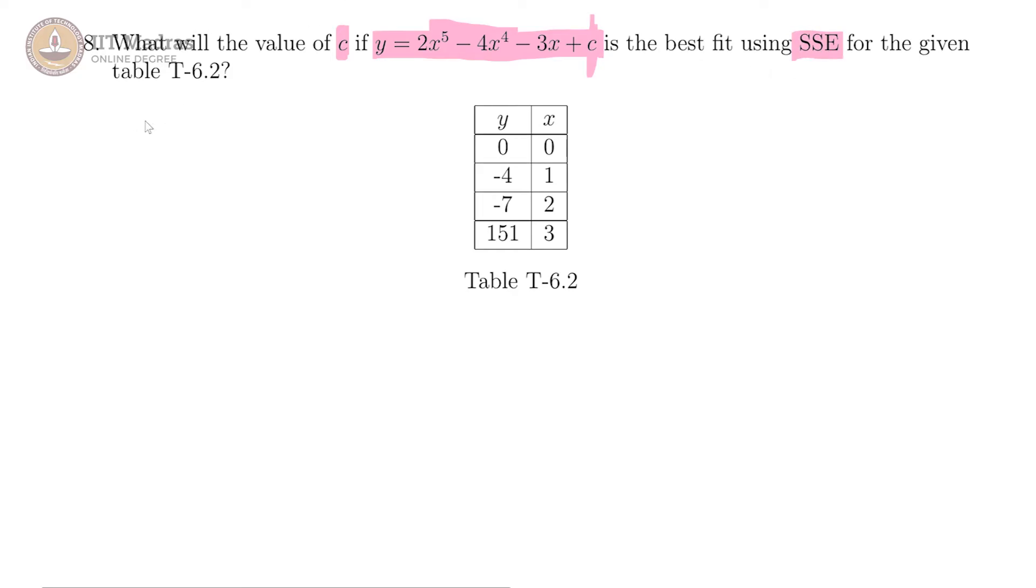Let us assume this curve is f of x equals 2x power 5 minus 4x power 4 minus 3x plus c. We are going to have to also put up the f of x value. f of 0 is then c because everything else is power of x, so f of 0 is c.